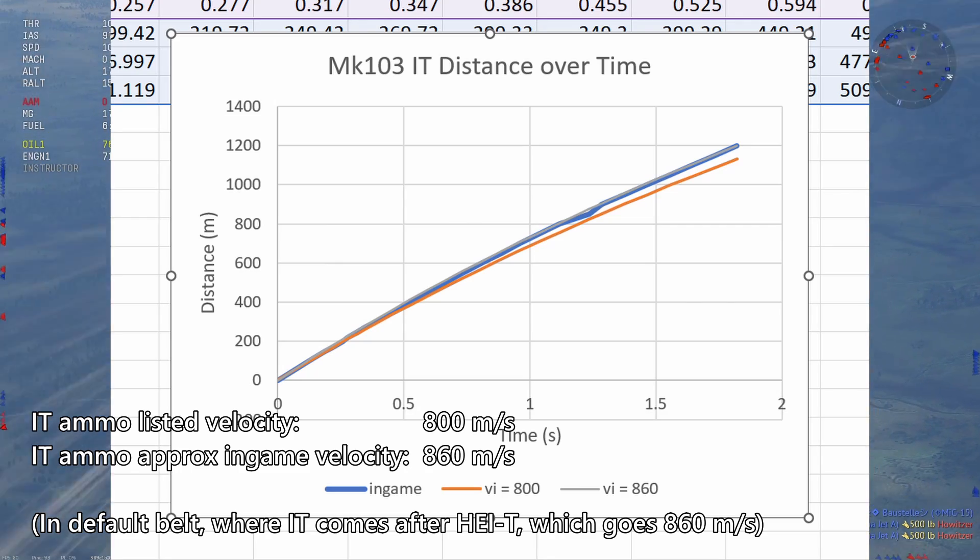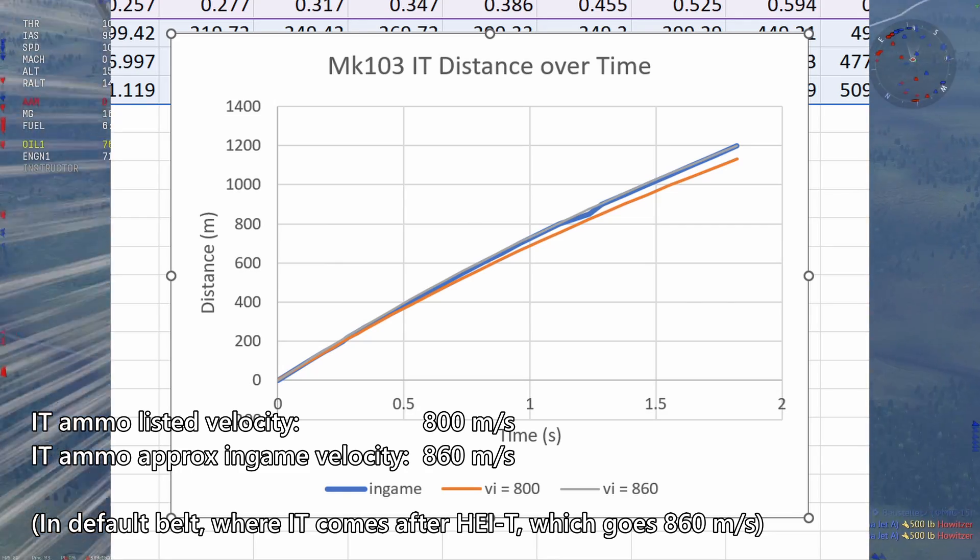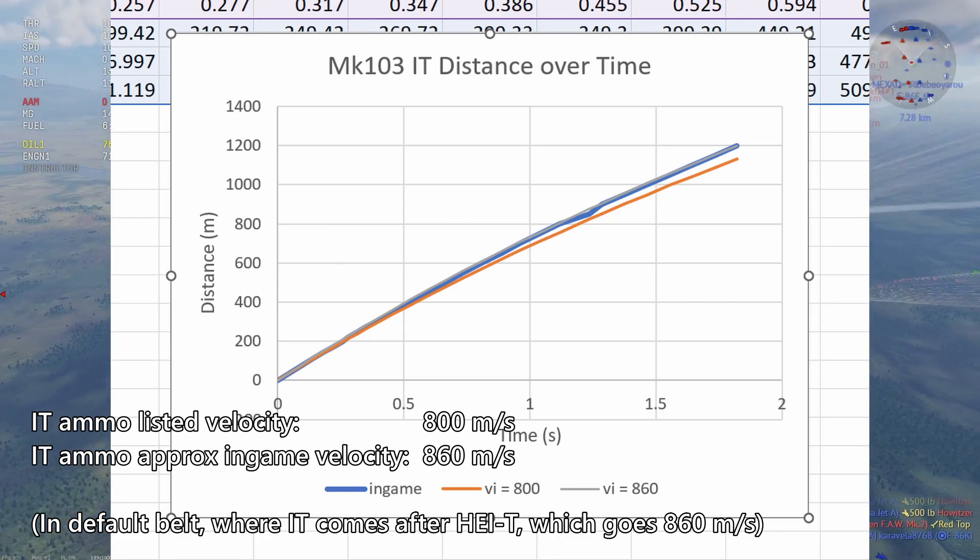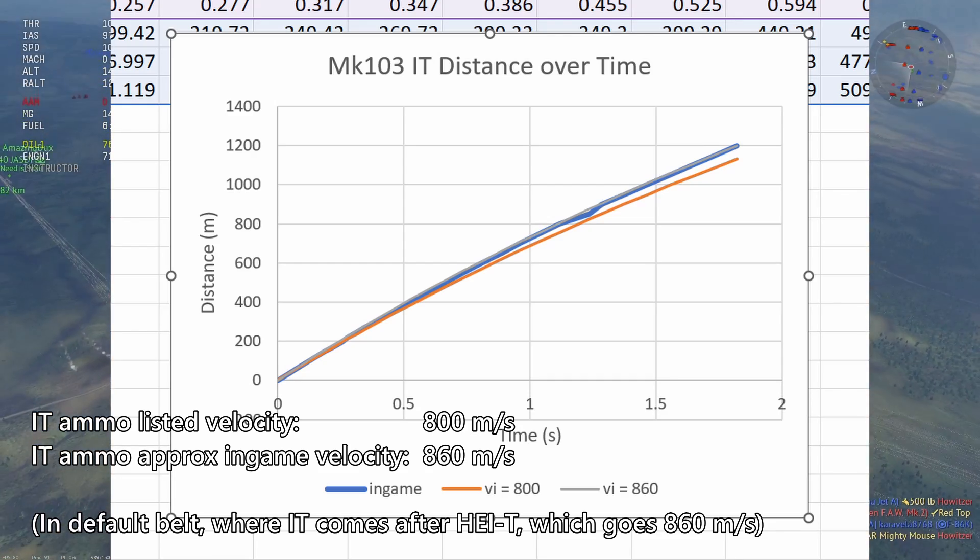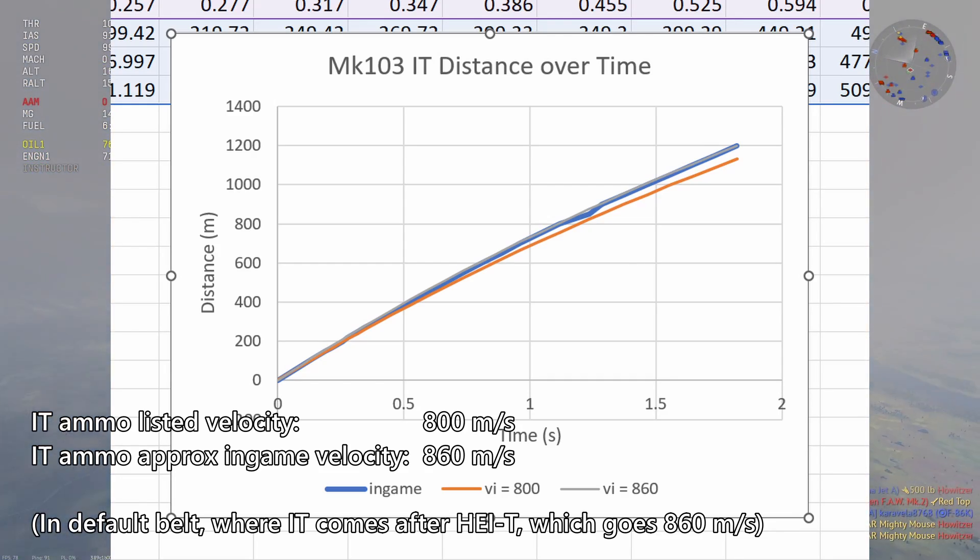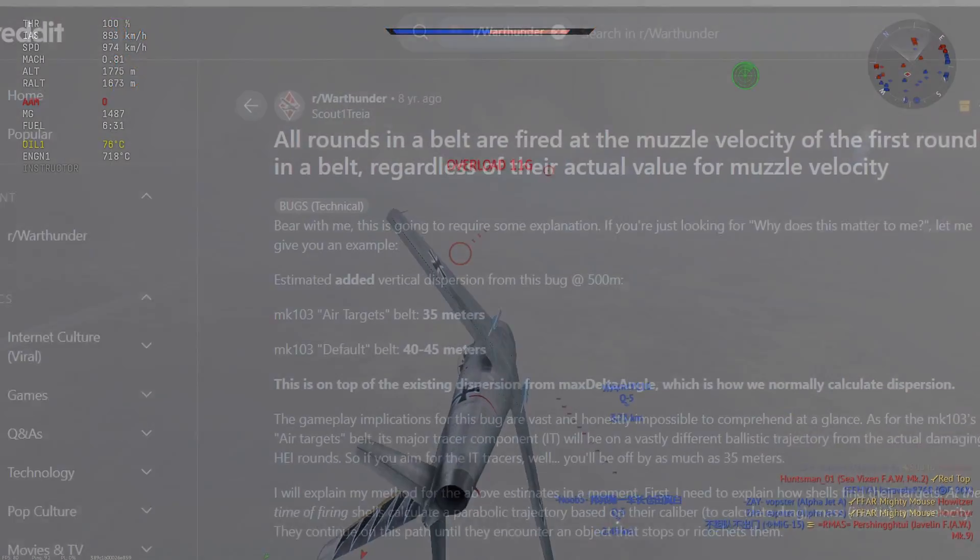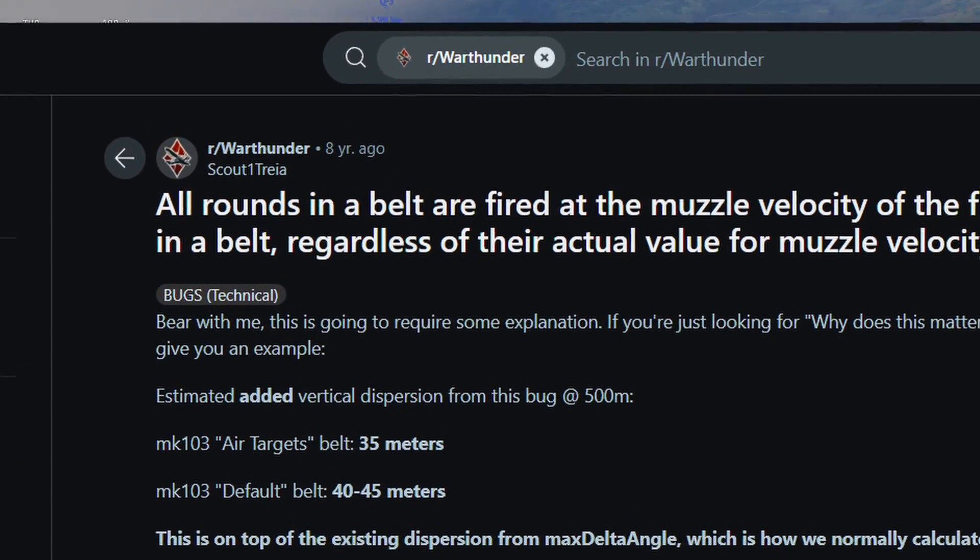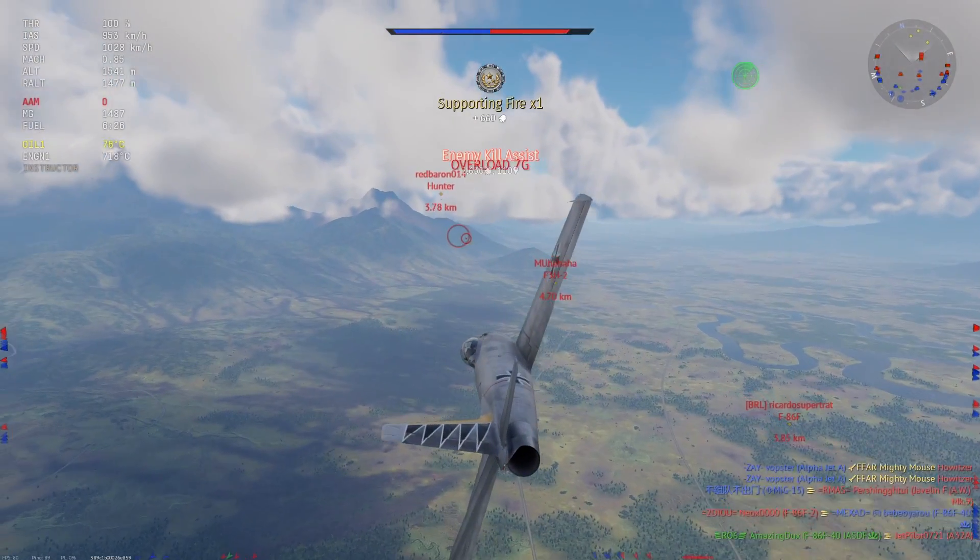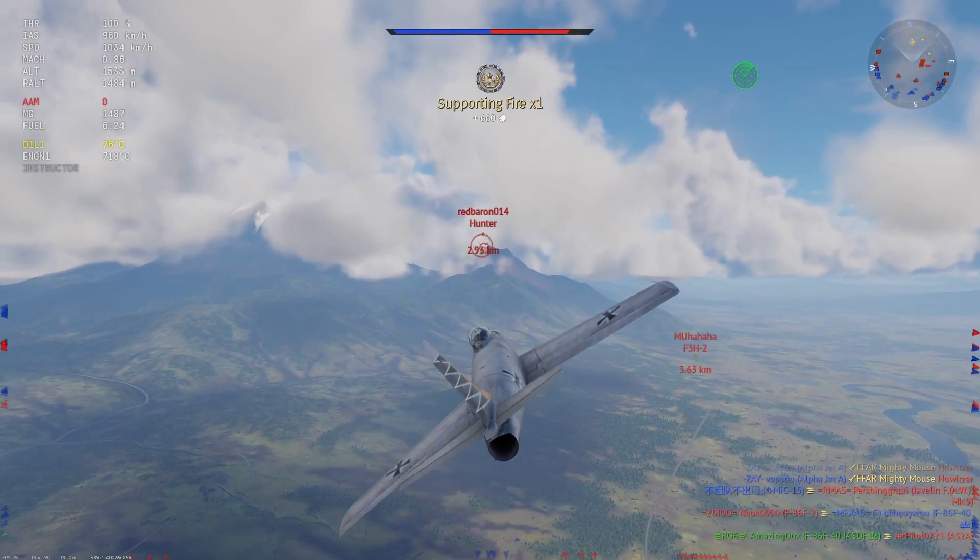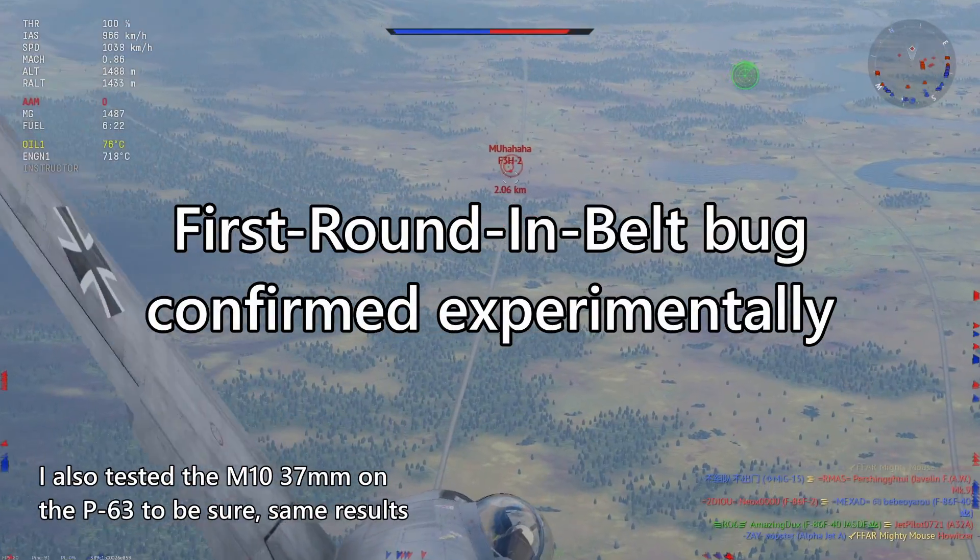And huh, after plotting, the curve for 860 m/s does seem to fit the data much better than the 800 m/s. After doing a bit of asking around, this apparently has been the case since the start of War Thunder, and is easily visible if you make a custom mission with rounds of vastly different speeds. It also apparently affects belts for autocannon tanks and SPAA in ground battles, so I guess the bug is in fact real.